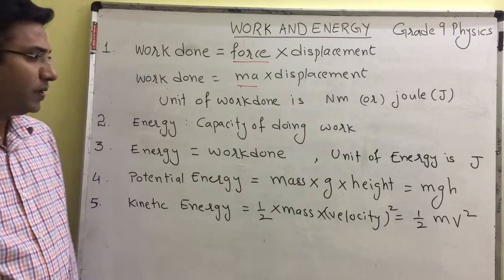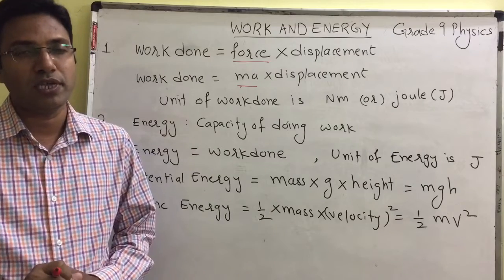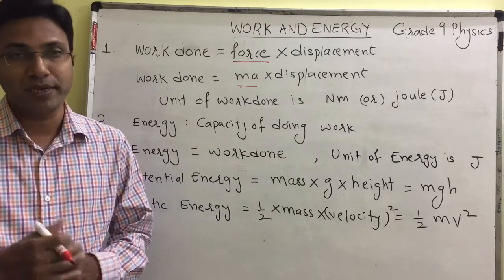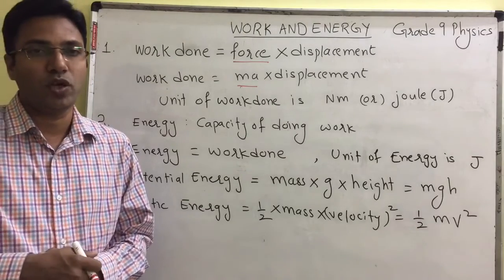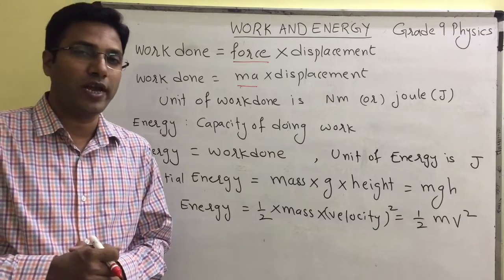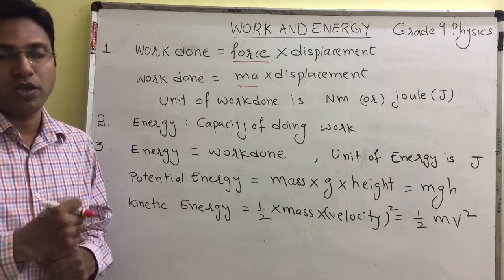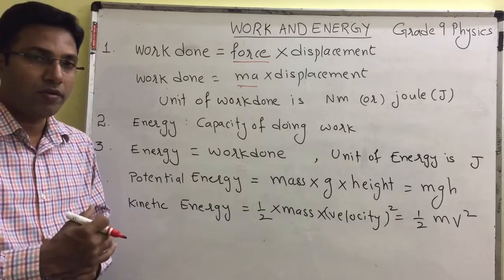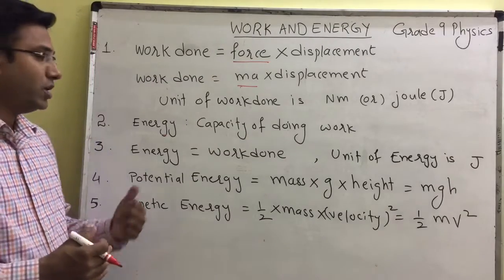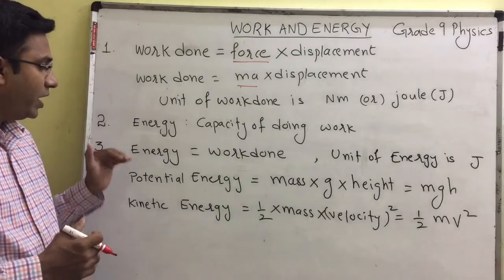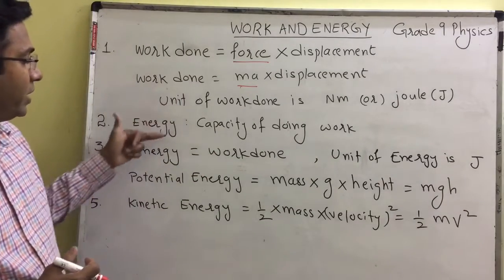The unit of work is newton meter or joule. Energy — the capacity of doing work is called energy. Every person has a different capacity of doing work; machines have different capacity of doing work. Work and energy are the same. Whatever work we do can be converted into energy or stored in the form of energy, and because of energy work can be done. That means energy is equal to work done. The unit of work and energy are the same, that is joule.